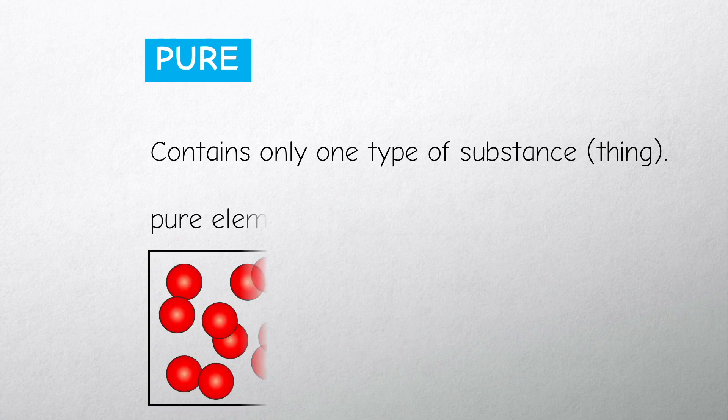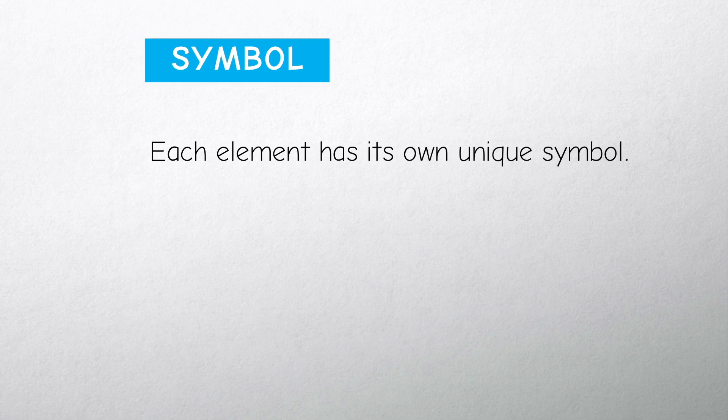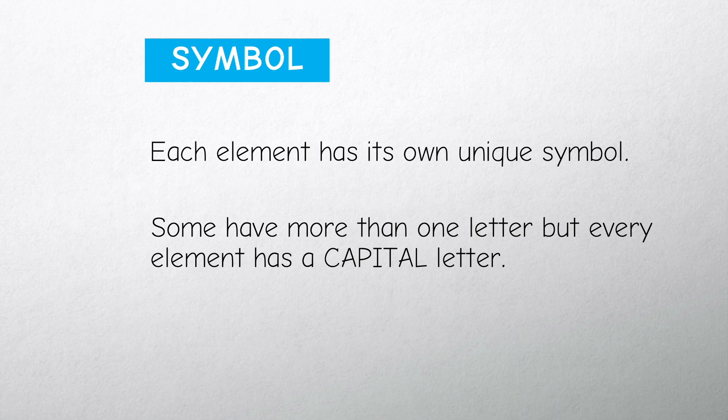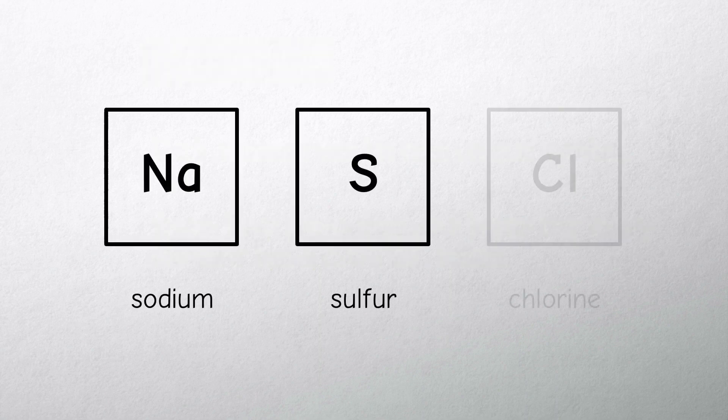Something which is pure contains only one type of substance or thing. You can have pure elements and pure compounds. Each element has its own unique symbol. Some have more than one letter, but every element has a capital letter. For example, sodium, sulfur, and chlorine.